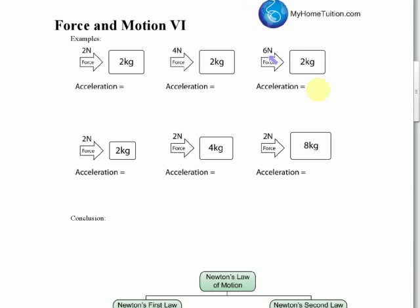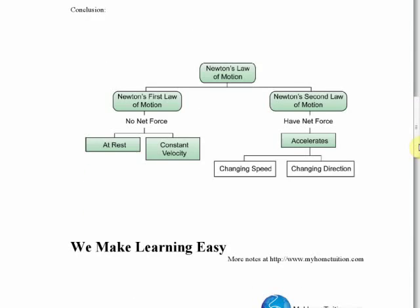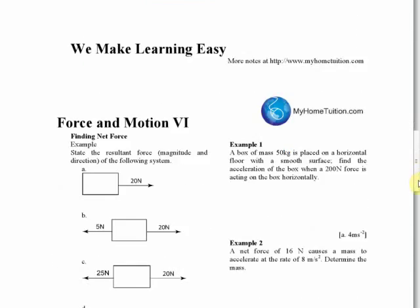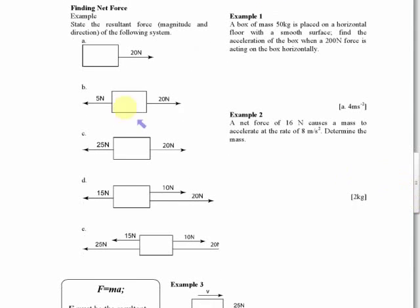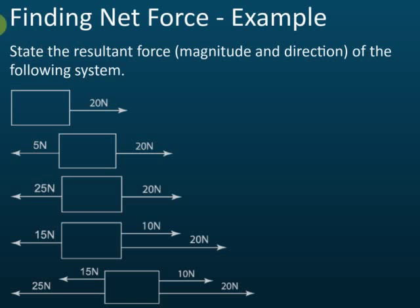Let's start with this one. Let me show you the notes. We are discussing this one. This is A, this is B, C, D, and E. Now for A, there's only one force acting on this object, so therefore the net force F equals 20 newtons.